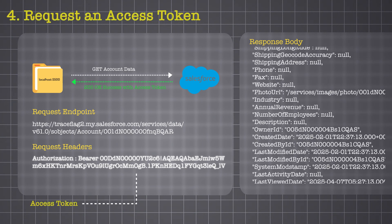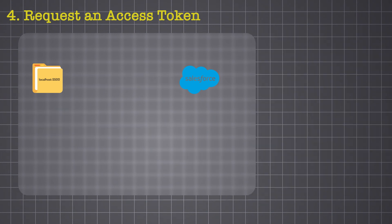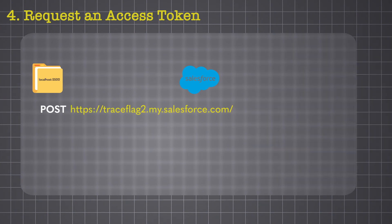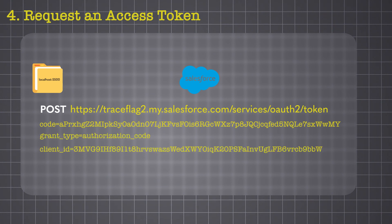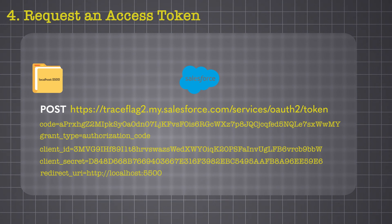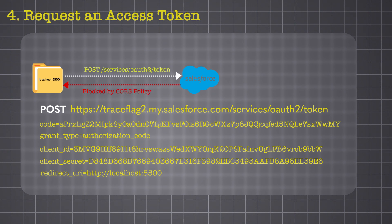Now to actually access Salesforce data, we need the access token — this is step four: requesting the access token. We will do a POST request to Salesforce to the endpoint services/oauth2/token. We pass the authorization code granted, along with the grant type which is 'authorization_code', the client ID of our external client app, the client secret which needs to be securely stored in our application, and finally the redirect URI.